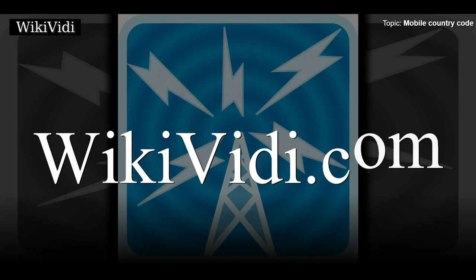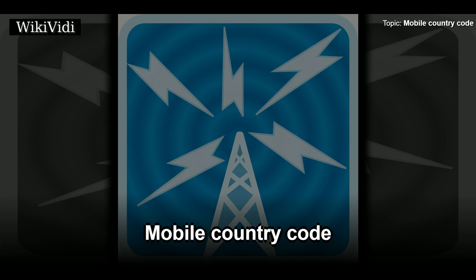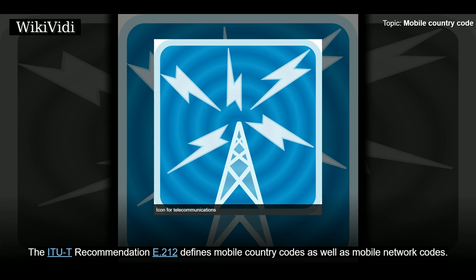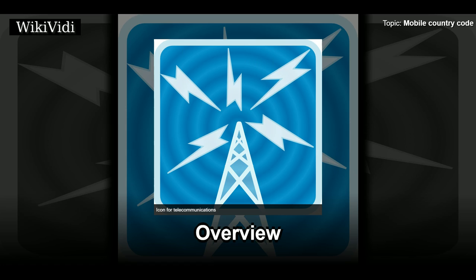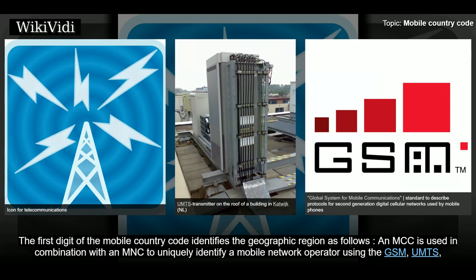A WikiVideo Documentaries production. Don't forget to like and subscribe. The ITU-T Recommendation E.212 defines mobile country codes as well as mobile network codes. The mobile country code consists of three decimal digits, and the mobile network code consists of two or three decimal digits.